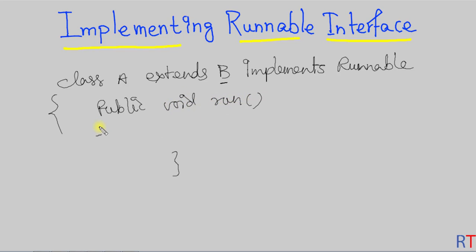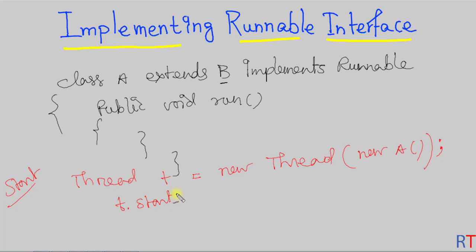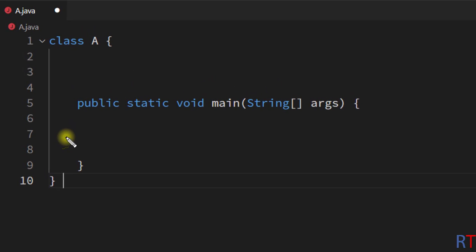To start the thread, we have to create an object of the Thread class, and the constructor of the Thread class will take the reference of class A as a parameter. Then we have to use the thread object and call the start method. By calling the start method, it will create one thread and start executing the code we write inside the run method.